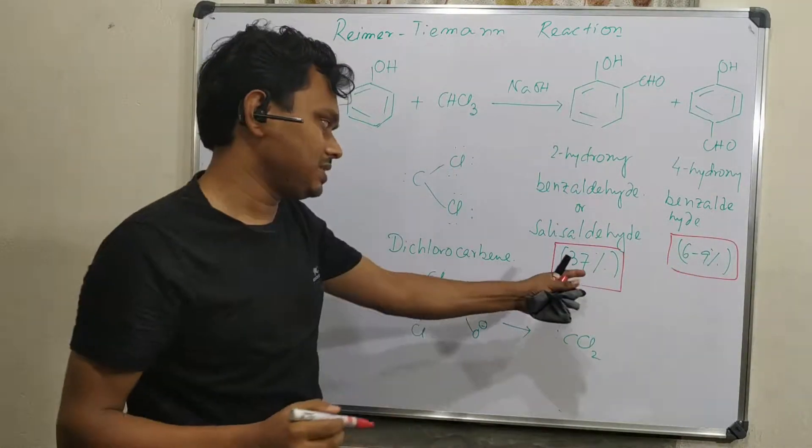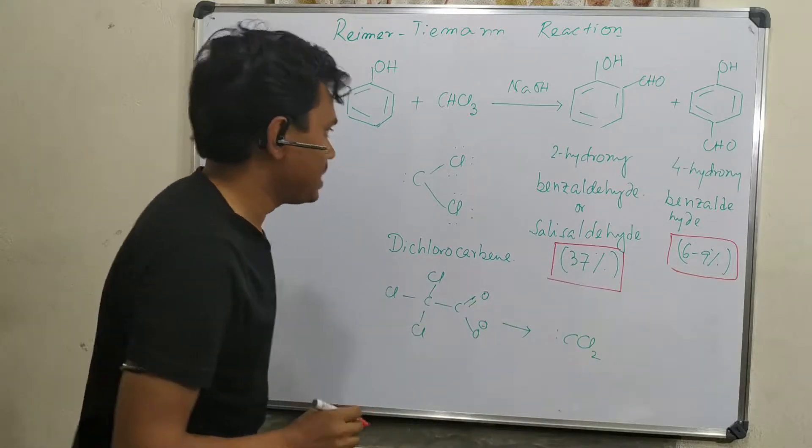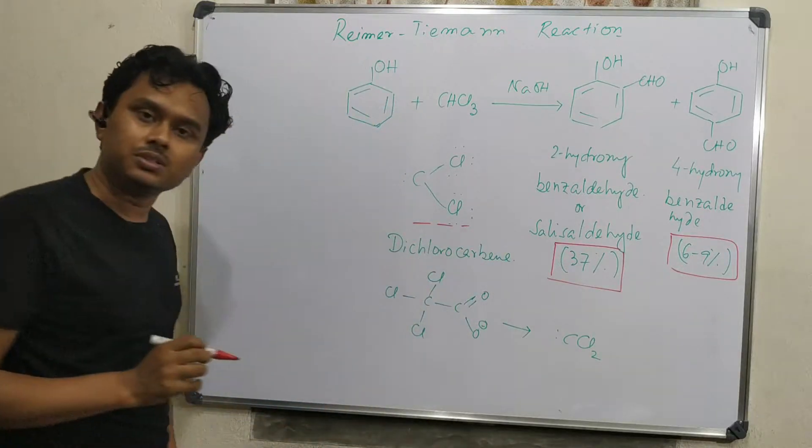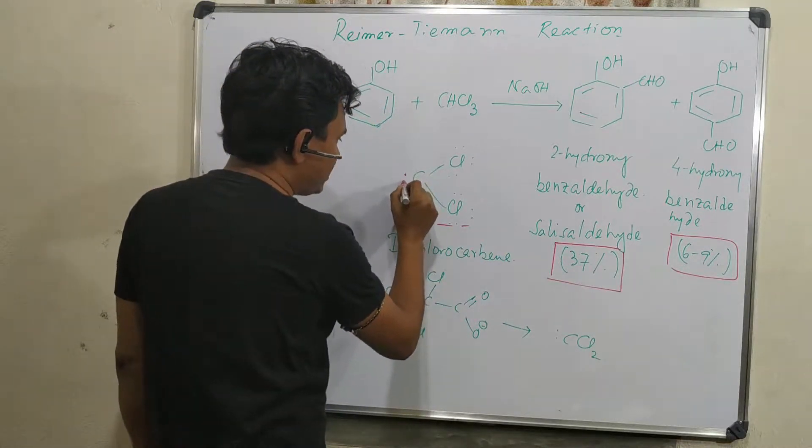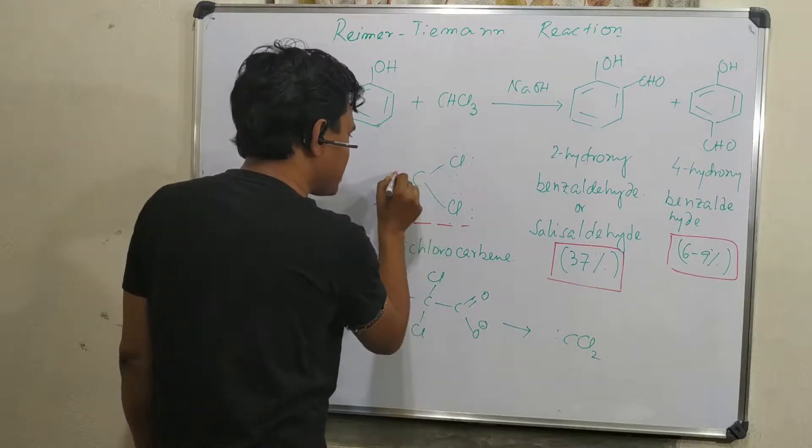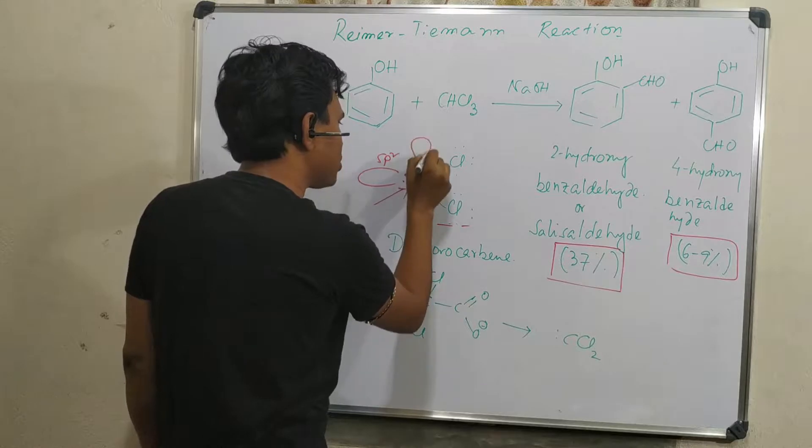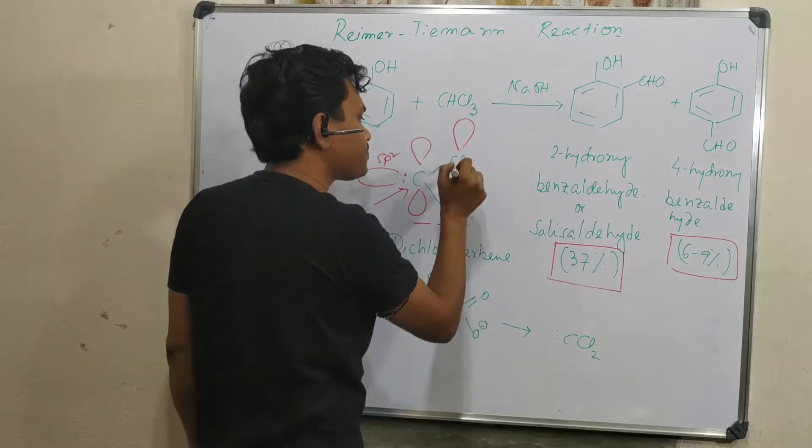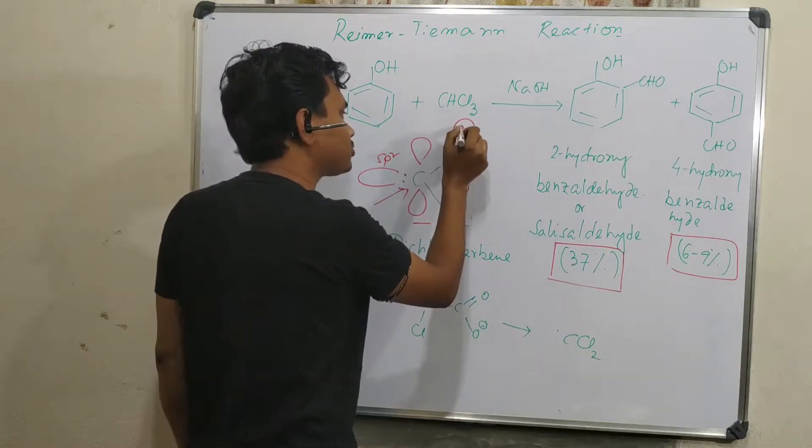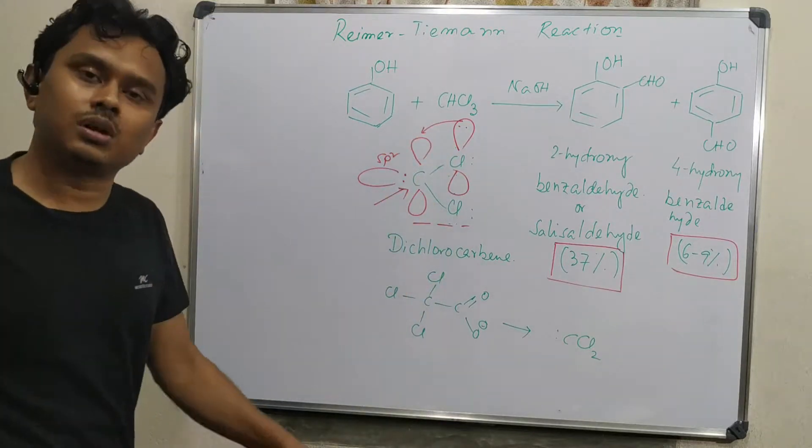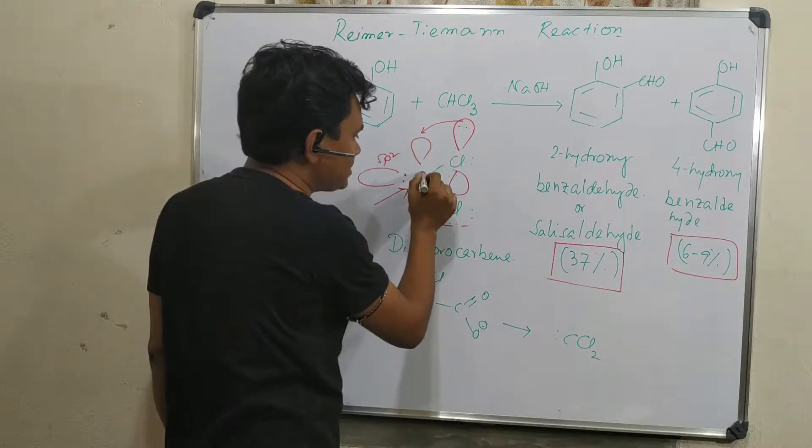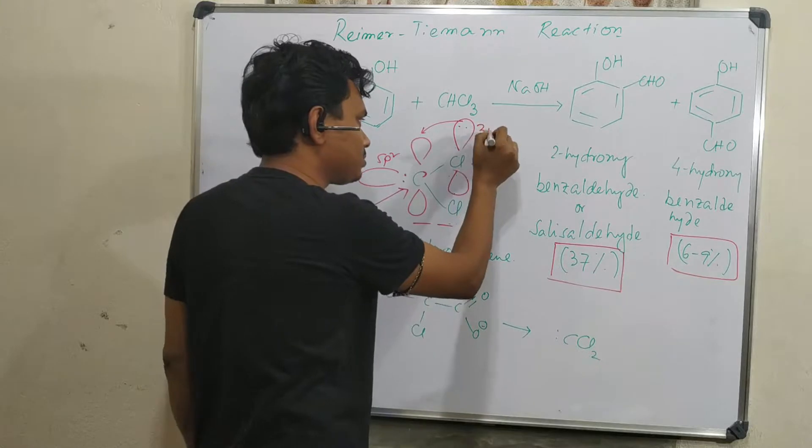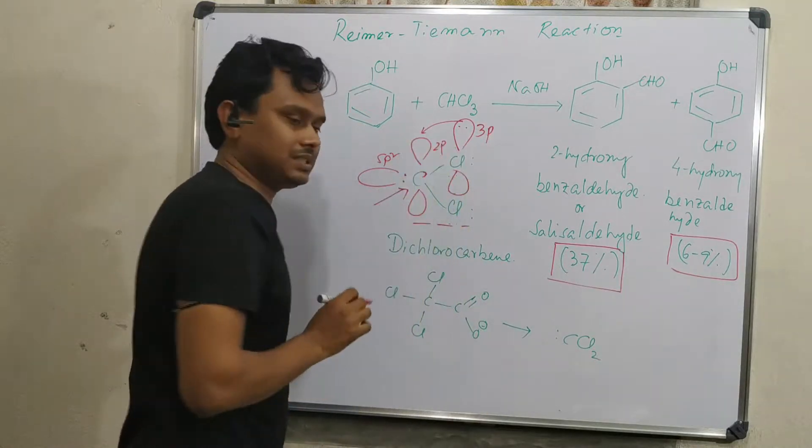I will explain why this is less but major. This reaction proceeds through a very reactive intermediate called dichlorocarbene, CCl2. This is a singlet carbene, meaning the lone pair is in an sp2 orbital and this p-orbital is vacant. The chlorine lone pair donates slightly to reduce electron deficiency, which relatively stabilizes this intermediate. I say relatively because this is 3p and this is 2p, so overlap is less, but it is stabilized.